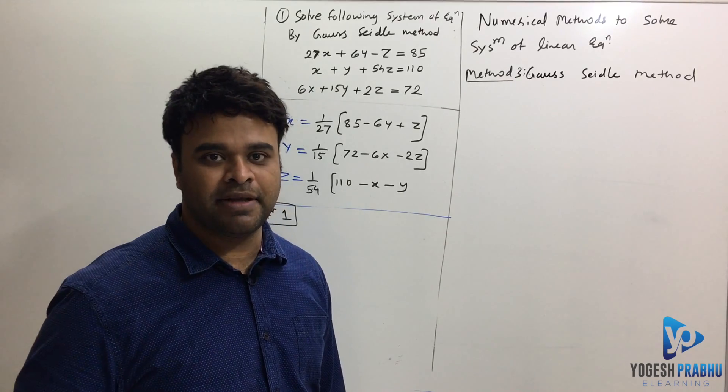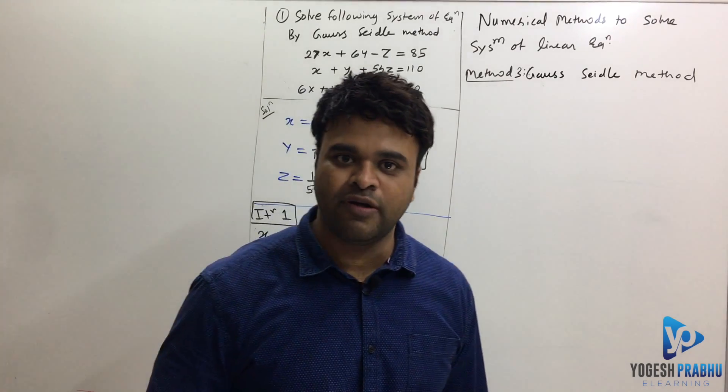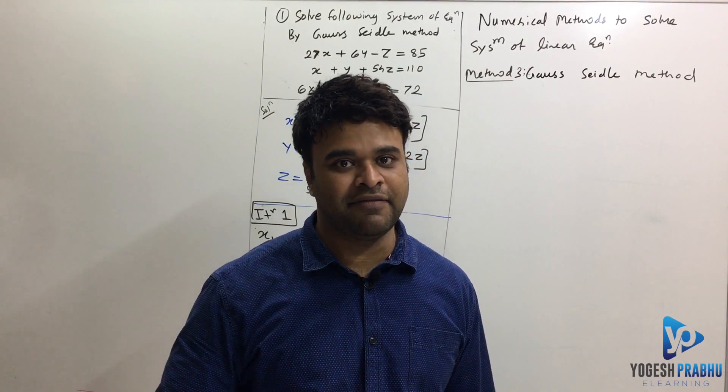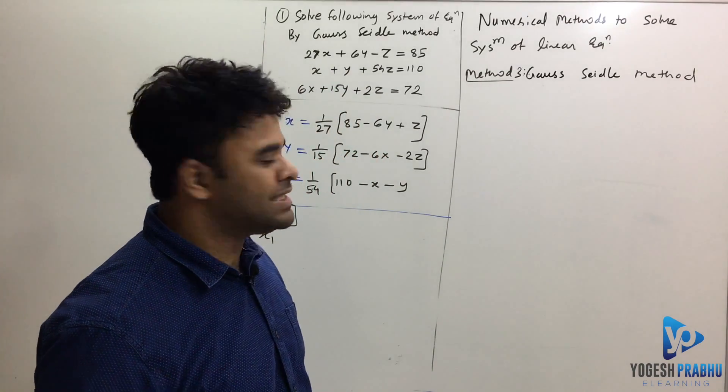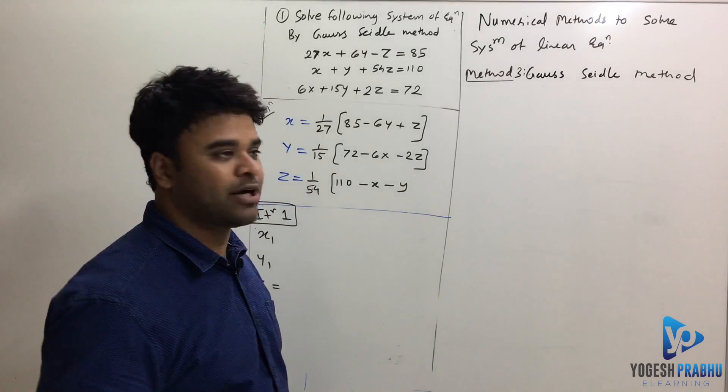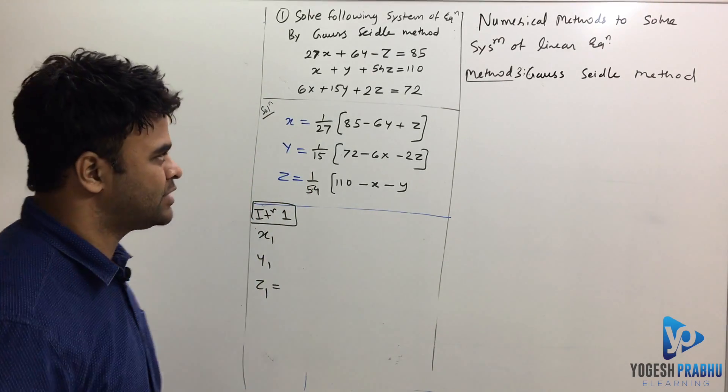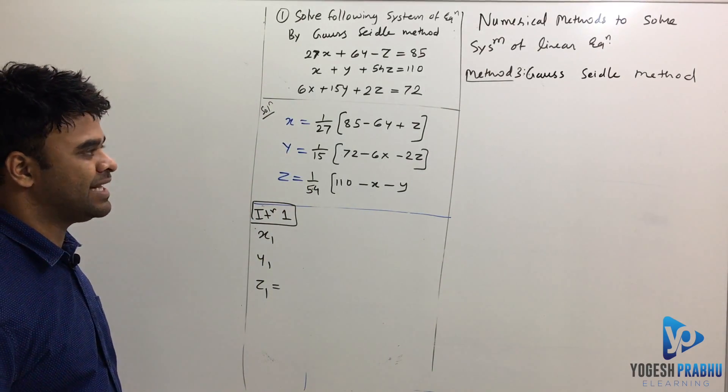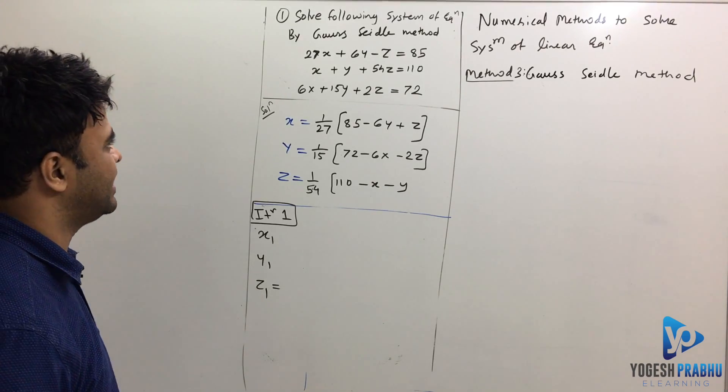Now the next is Gauss-Seidel method. This is a method to solve system of linear equations and this method is actually very similar, almost the same as the previous method, the Jacobi's method. This method is also iterative but there is only a slight difference in the solving.